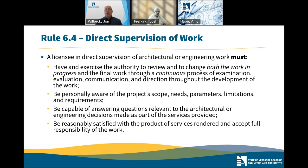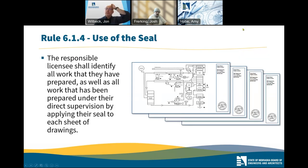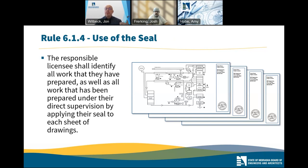Let's talk about the use of the seal. The licensee identifies all the work they prepared by applying their seal to technical documents. One type of technical document is drawings, and the act and the board rules say the licensee puts their seal on each drawing. For example, if there is a project where more than one licensee had information on that drawing, each licensee would put their seal on that drawing, and it would have to be clear to someone looking at the drawing sheet which licensee was responsible for what work on that drawing.